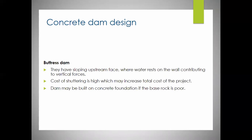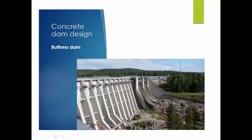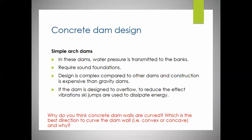Buttress dams have a sloping upstream face where water rests on the wall, contributing to vertical forces. The cost of shuttering is high, which may increase the total cost of the project. The dam may be built on concrete foundations if the base rock is poor - building all those buttress supports does get expensive.